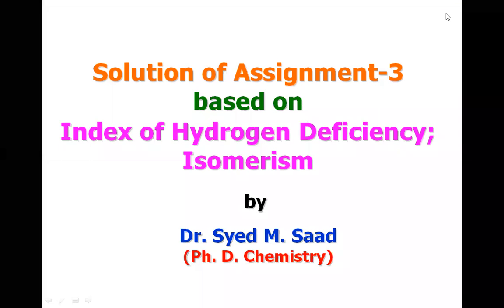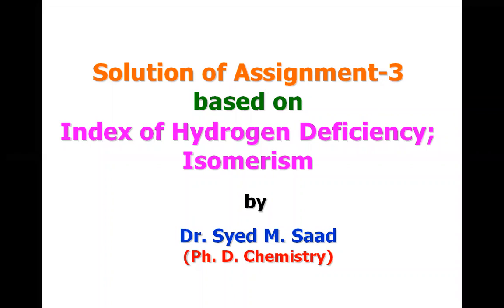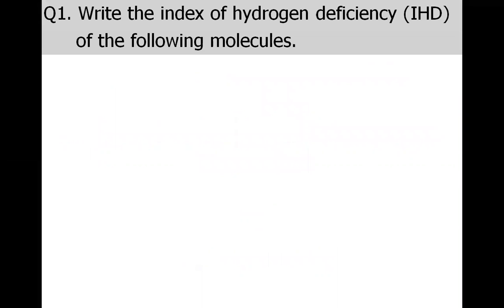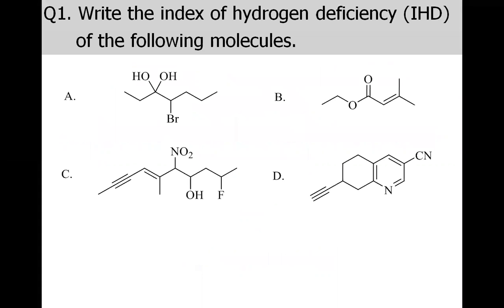Assalamualaikum dear friends and students. Today we will discuss the solution of Assignment 3 based on the concepts of index of hydrogen deficiency and isomerism. The first question of this assignment was: write the index of hydrogen deficiency, also called IHD, for the following four molecules.